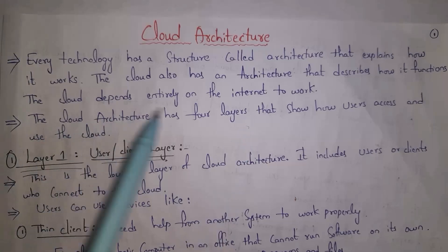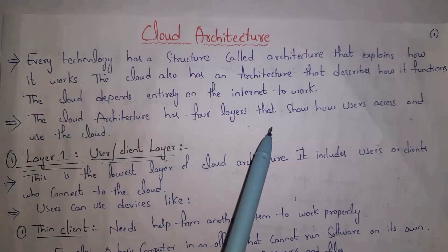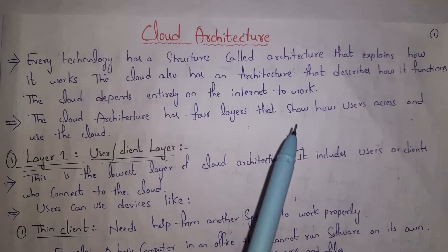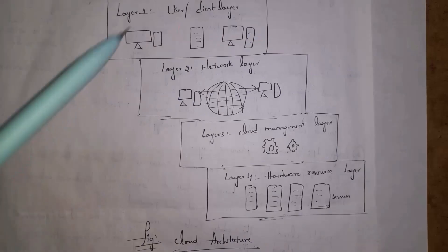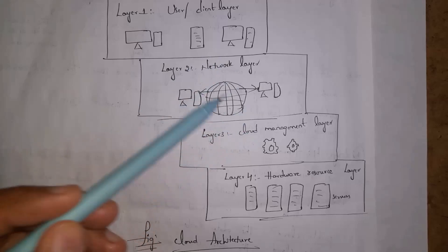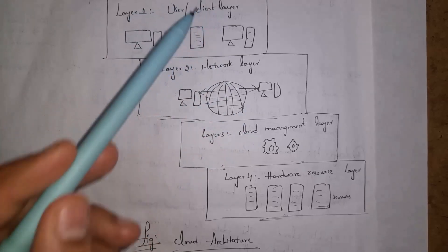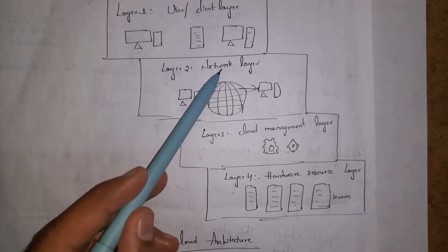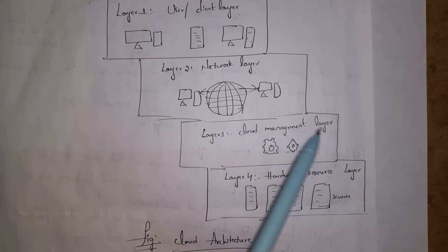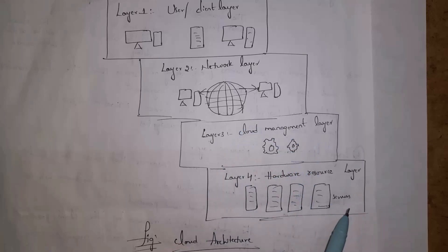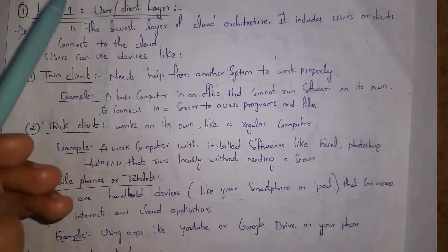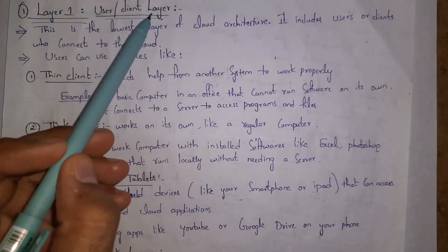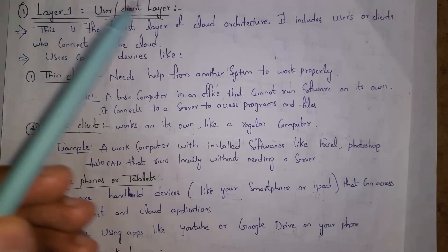Cloud architecture has four layers. By seeing those four layers we can clearly know how a user accesses and uses the cloud. The four layers in cloud architecture are: first, the user or client layer; second, the network layer; third, the cloud management layer; and fourth, the hardware resource layer. I will explain each layer in detail.